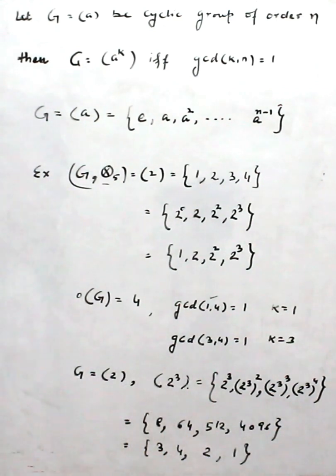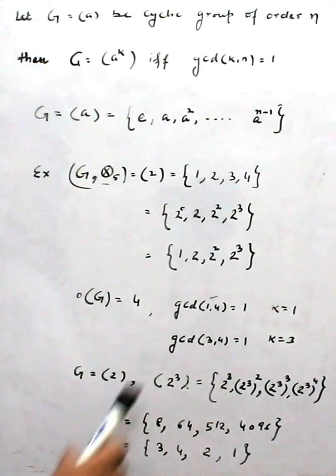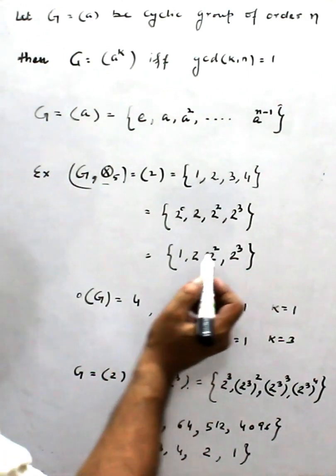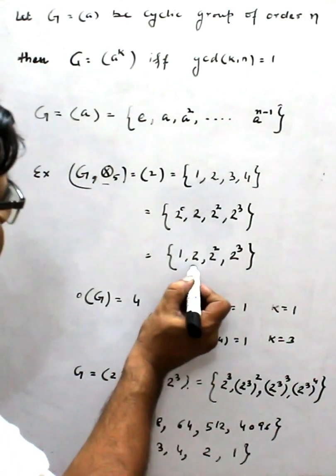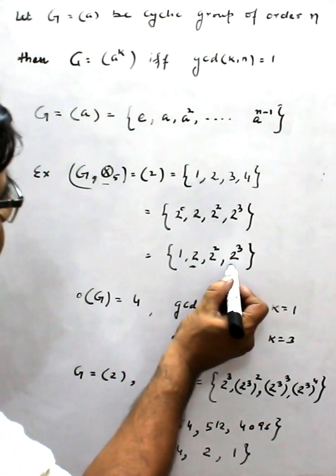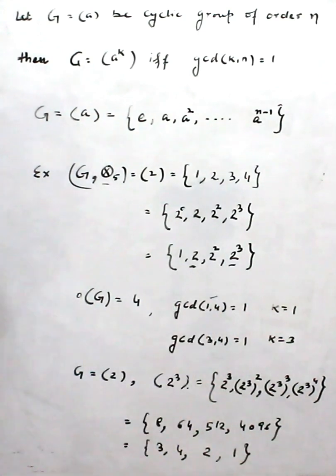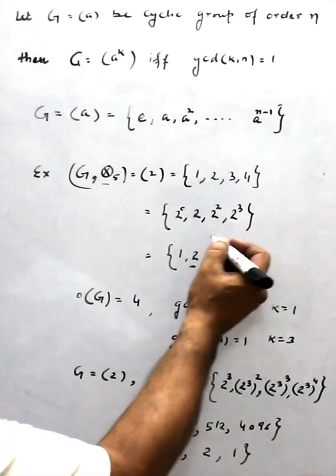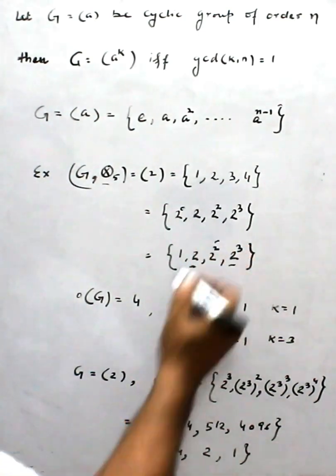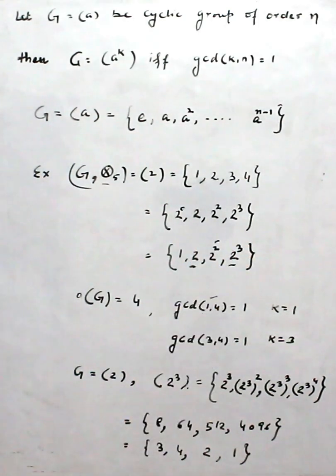This confirms that 2^3 is indeed a generator of G, since it produces all four elements. Now let's also check whether 2^2 is a generator.